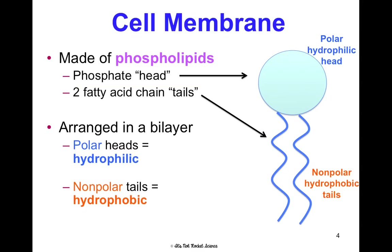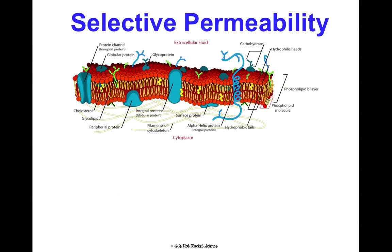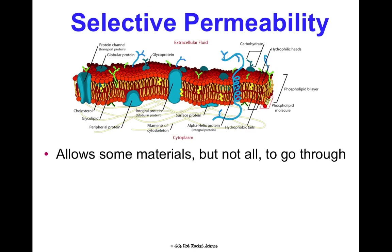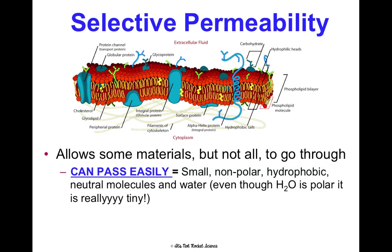This really matters. This idea is so critical — it's why some things can go in and some things can't. Here's what can pass through easily: small particles can pass through easily because they can just shimmy their way through. Nonpolar molecules can pass through easily. Hydrophobic molecules can pass through easily.